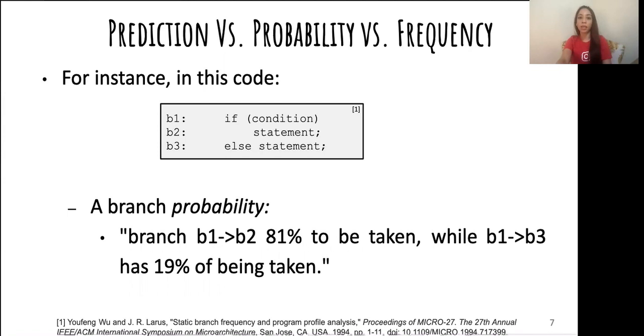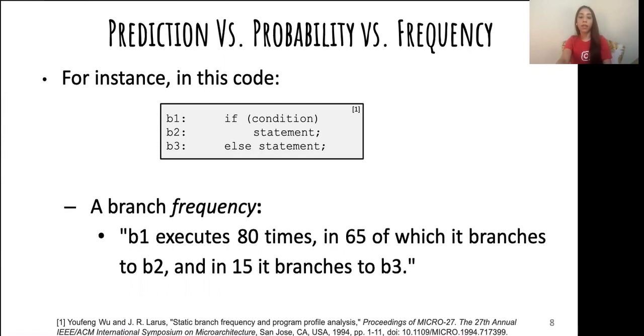Finally, a branch frequency measures how often a given branch is taken. In this example, let's say that basic block b1 is executed 80 times, in 65 of which each branch should be 2, and the other 15 times each branch should be 3.